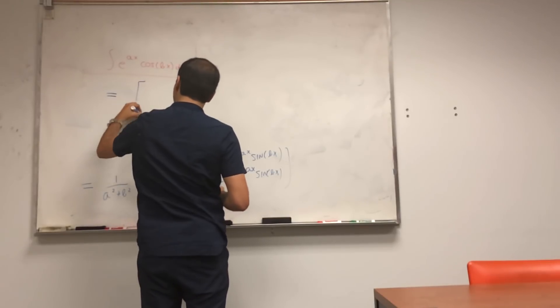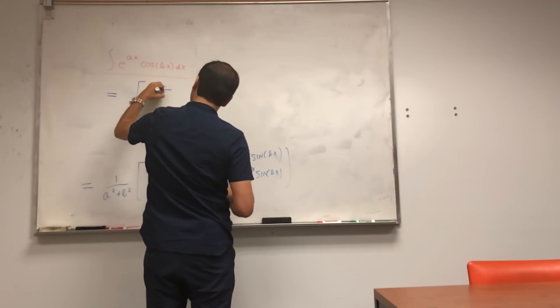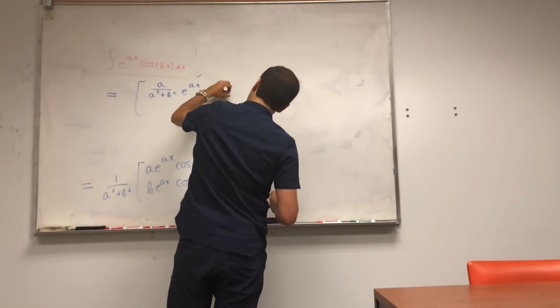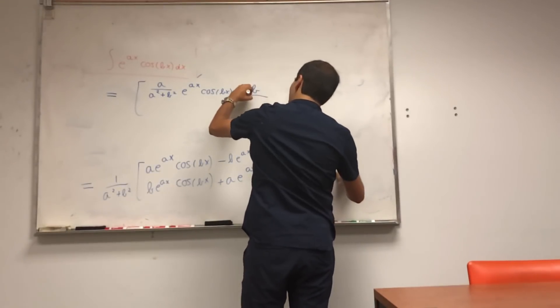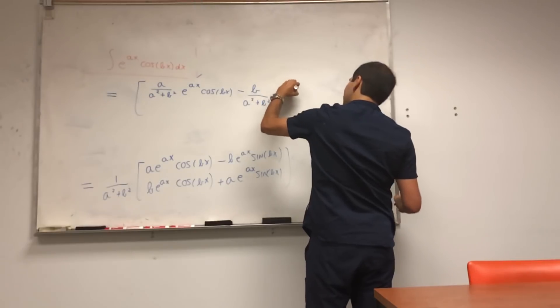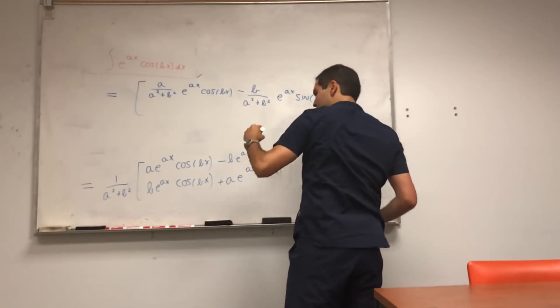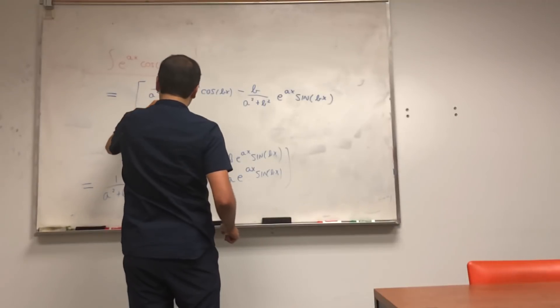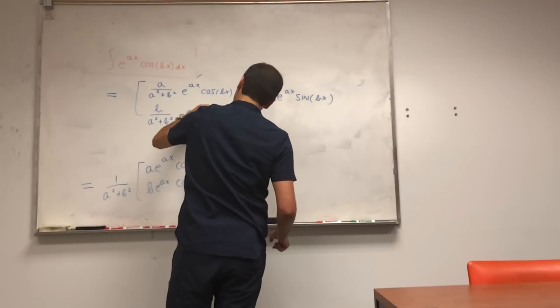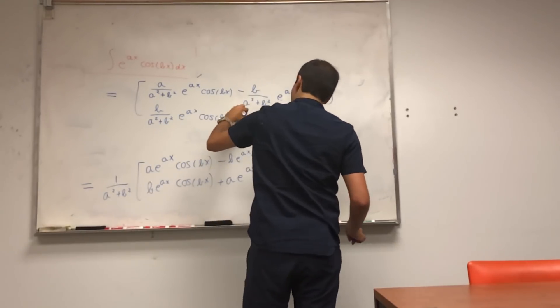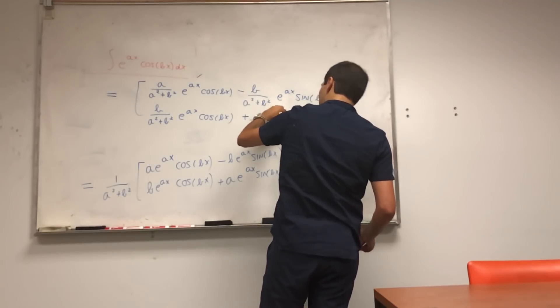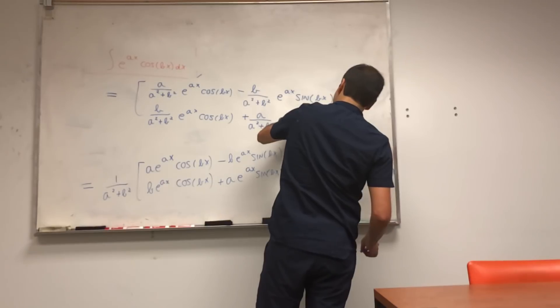It becomes a over a squared plus b squared e to the ax cosine of bx minus b over a squared plus b squared e to the ax sine of bx, and b over a squared plus b squared e to the ax cosine of bx plus a over a squared plus b squared e to the ax sine of bx.